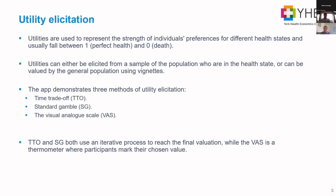The app demonstrates three methods of utility elicitation. Time trade-off asks how many years of full health you would swap for 10 years of living in a health state. Standard gamble asks what risk of instant death you would accept to live in full health compared with living in the health state for the rest of your life. Both use an iterative process. The final method is the visual analog scale — a thermometer where participants mark their value.